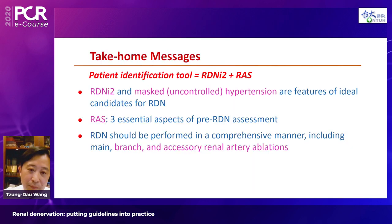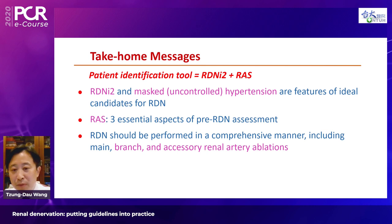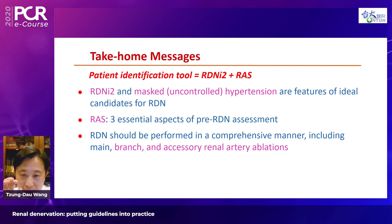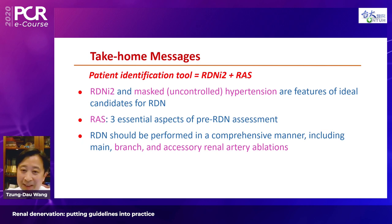In conclusion, the patient identification tool separates into RDN-I2 and RAS. RDN-I2 covers five key features of candidates, while RAS describes the three-component pre-RDN assessment. Blood pressure profile — particularly masked hypertension on 24-hour monitoring — is critical. We also emphasize comprehensive ablation of both main, branch, and accessory renal arteries. Thank you.